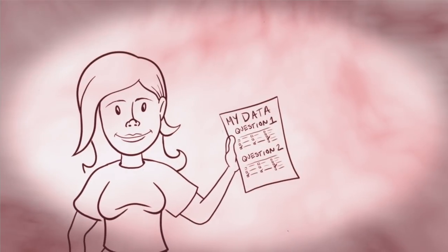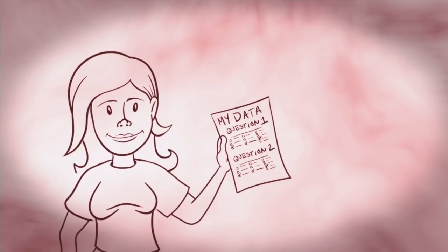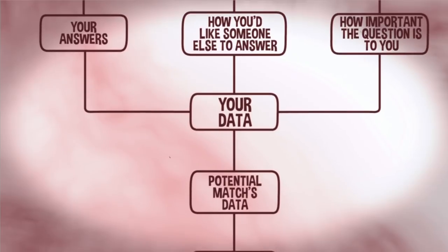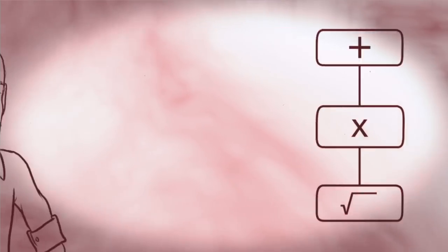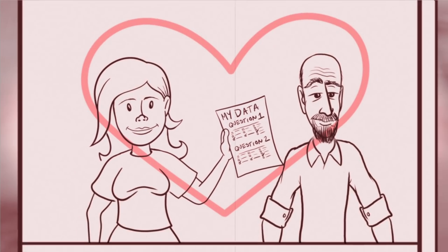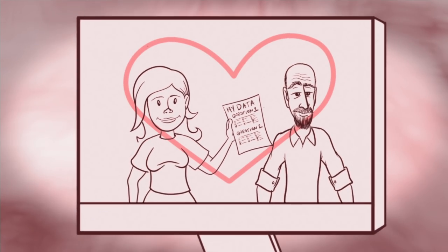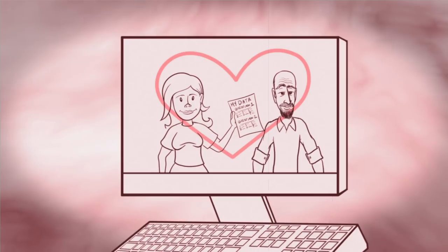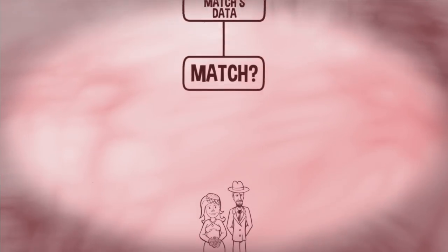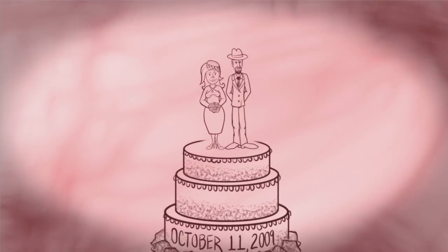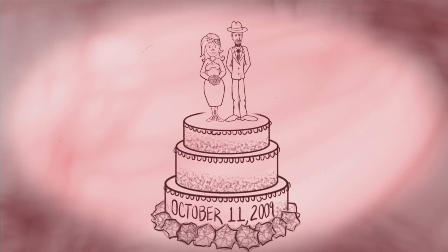Any time OkCupid matches two people, it goes through the steps we just outlined: first, it collects data about your answers, then it compares your choices and preferences to other people in simple mathematical ways. The ability to take real-world phenomena and make them something a microchip can understand is, I think, the most important skill anyone can have these days. Like you use sentences to tell a story to a person, you use algorithms to tell a story to a computer. If you learn the language, you can go out and tell your stories.